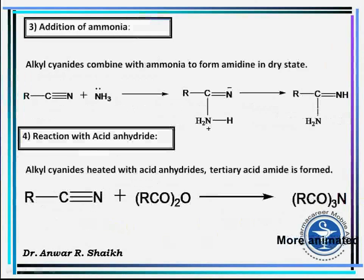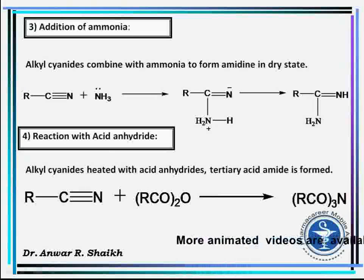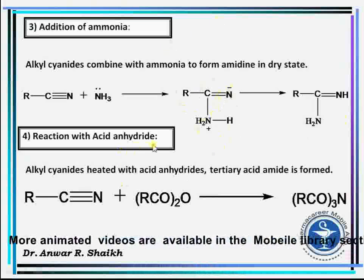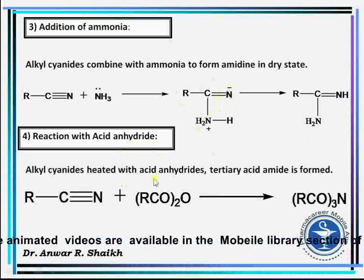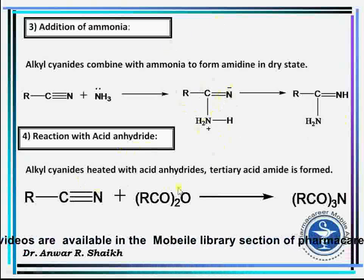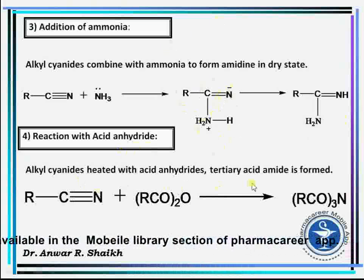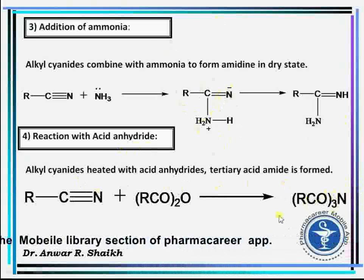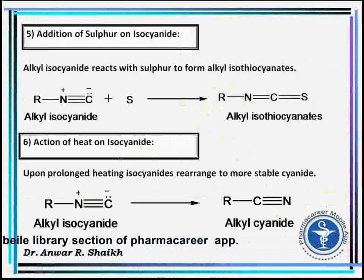Addition of ammonia: alkyl cyanide combines with ammonia to form amidine. Reaction with acid anhydride: alkyl cyanide when heated with an acid anhydride, a tertiary acid amide is formed.